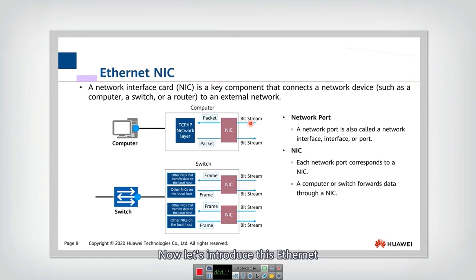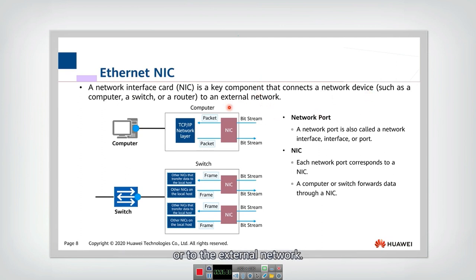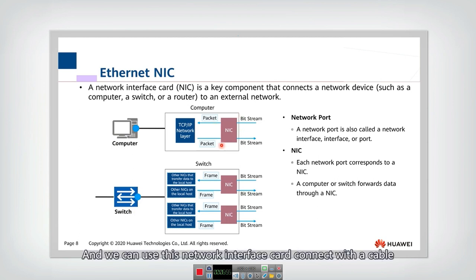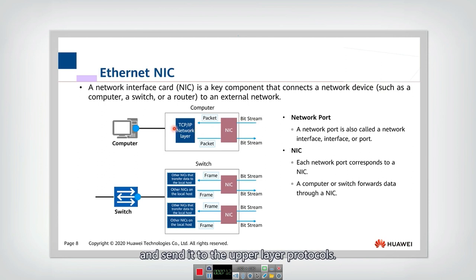Now let's introduce the Ethernet network interface card. The network interface card is a very important component that connects network devices to the Internet or to an external network. The network device can be a computer, a switch, or a router. If we want to connect a computer to the Internet, it must have a network interface card. Using the network interface card connected with a cable, packets transmitted from other PCs or devices can enter the network interface card, which translates the bit streams into packets and sends them to upper layer protocols.